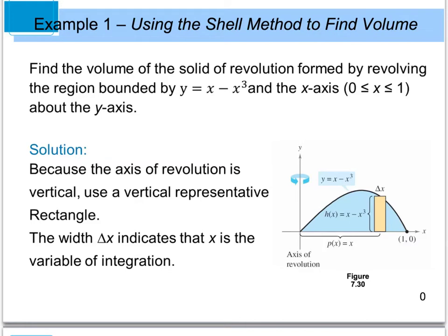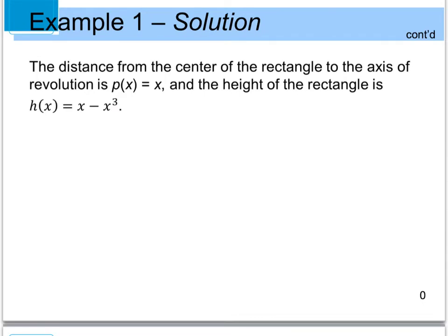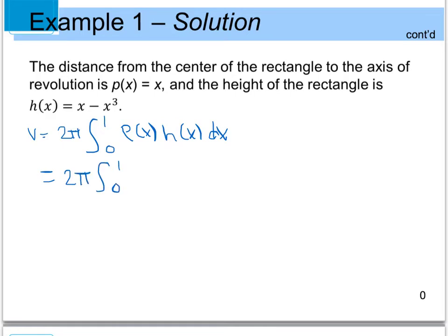We also need to find p(x). Looking at the diagram, p(x) is just equal to x — the distance from the axis to the center of the rectangle. So our volume equation is 2π times the integral from 0 to 1 of p(x) times h(x) dx. Plugging in, p(x) equals x and h(x) equals x minus x cubed, giving us 2π times the integral from 0 to 1 of x times (x minus x cubed) dx.